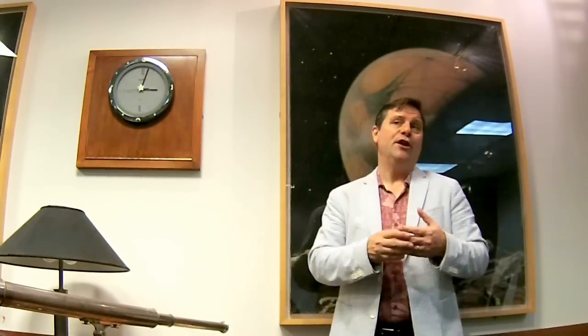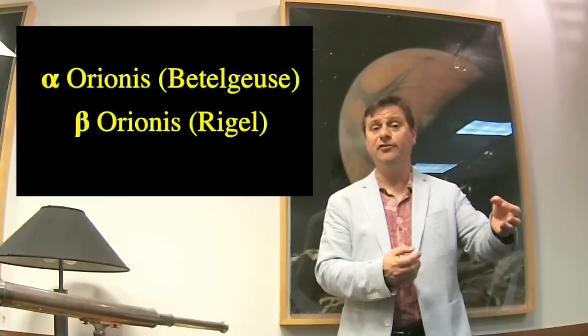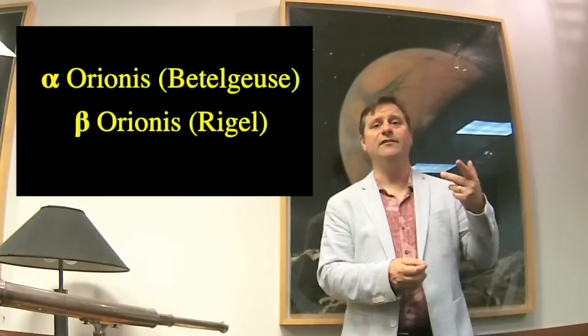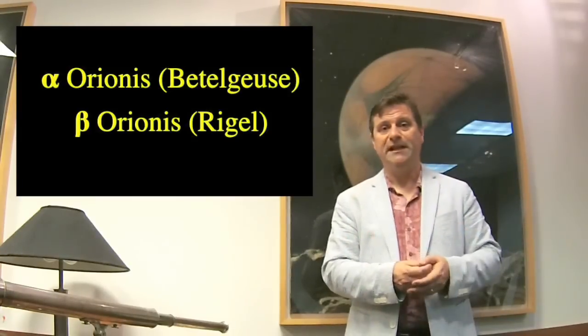Some prominent constellations are those that we call the zodiac. The zodiac are 12, or if you wish, 13 constellations through which the sun appears to move throughout a year. One way that we can find our way around the sky is simply look for these constellations. The brightest star in Orion, its name is Betelgeuse, and we have added the Greek letter alpha to say that it is the brightest. Rigel is the second brightest in that constellation, and so we designate it with the Greek letter beta.